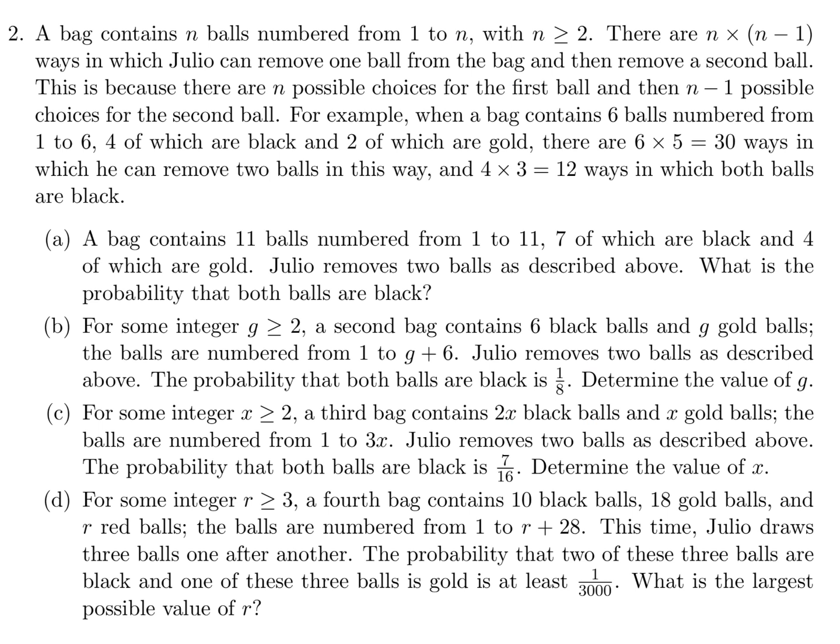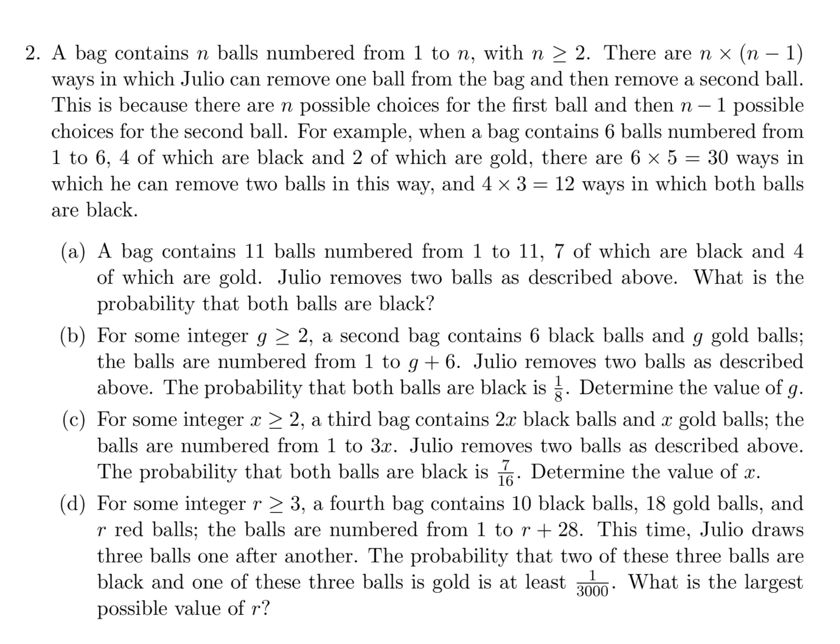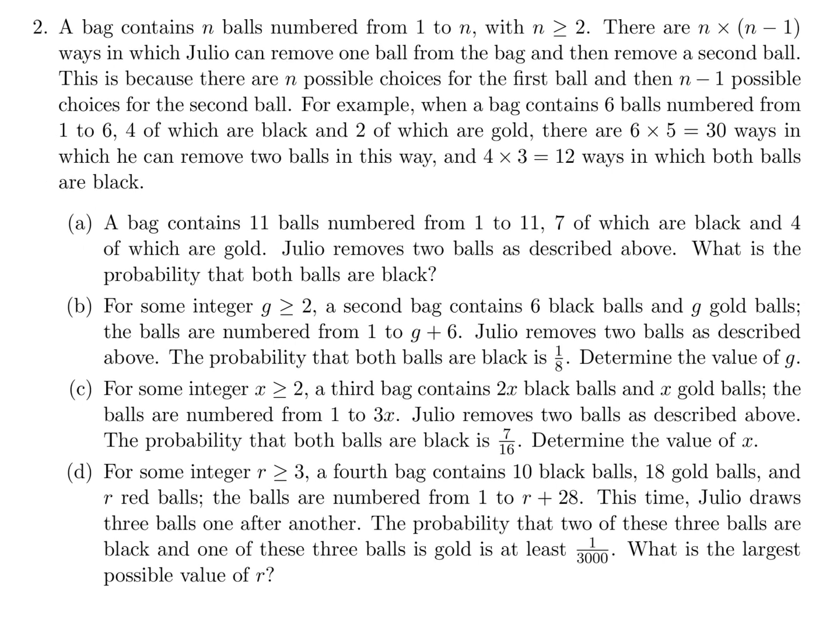A bag contains n balls numbered from 1 to n with n greater than or equal to 2. There are n times n minus 1 ways in which Julio can remove one ball from the bag and then remove a second ball. This is because there are n possible choices for the first ball and then n minus 1 possible choices for the second ball. For example, when a bag contains 6 balls numbered from 1 to 6, 4 of which are black and 2 of which are gold, there are 6 times 5, which equals 30 ways in which he can remove 2 balls in this way, and 4 times 3, which is 12 ways in which both balls are black.